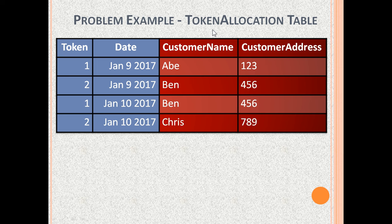This is a Token Allocation Table. Its columns are Token, Date, Customer Name, and Customer Address. This table stores data for tokens given out to customers after they visit a place with a queue of people.